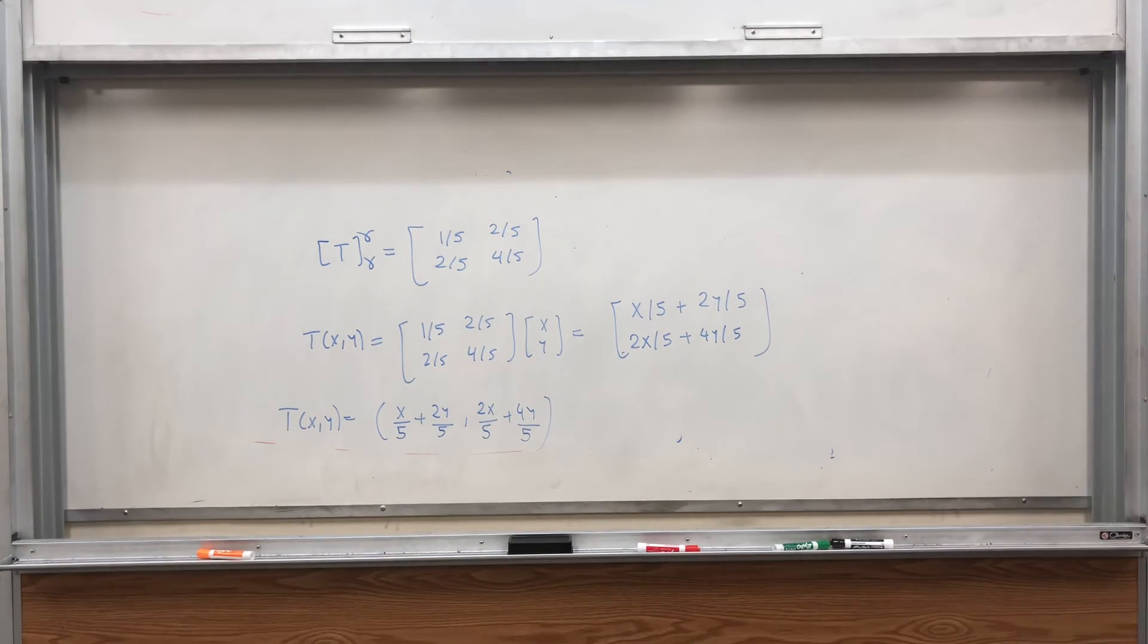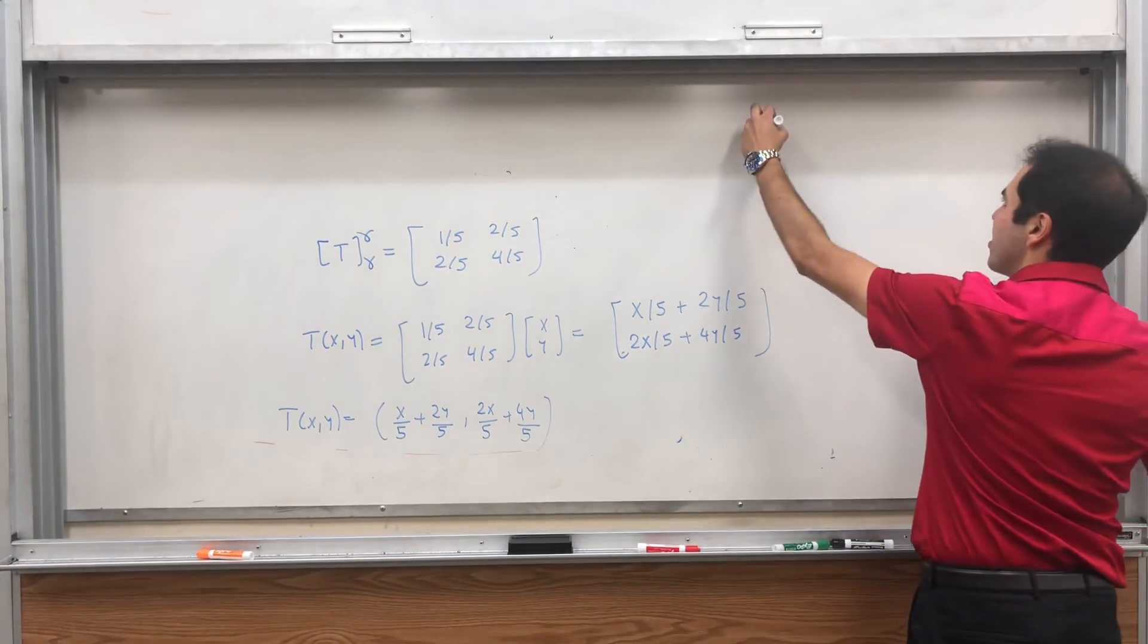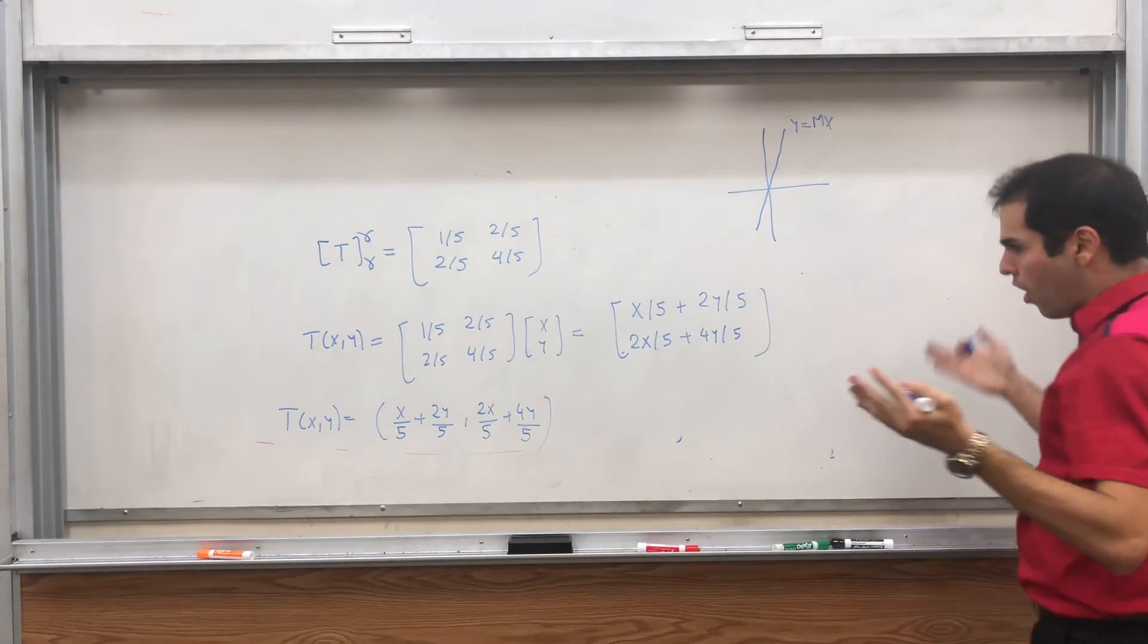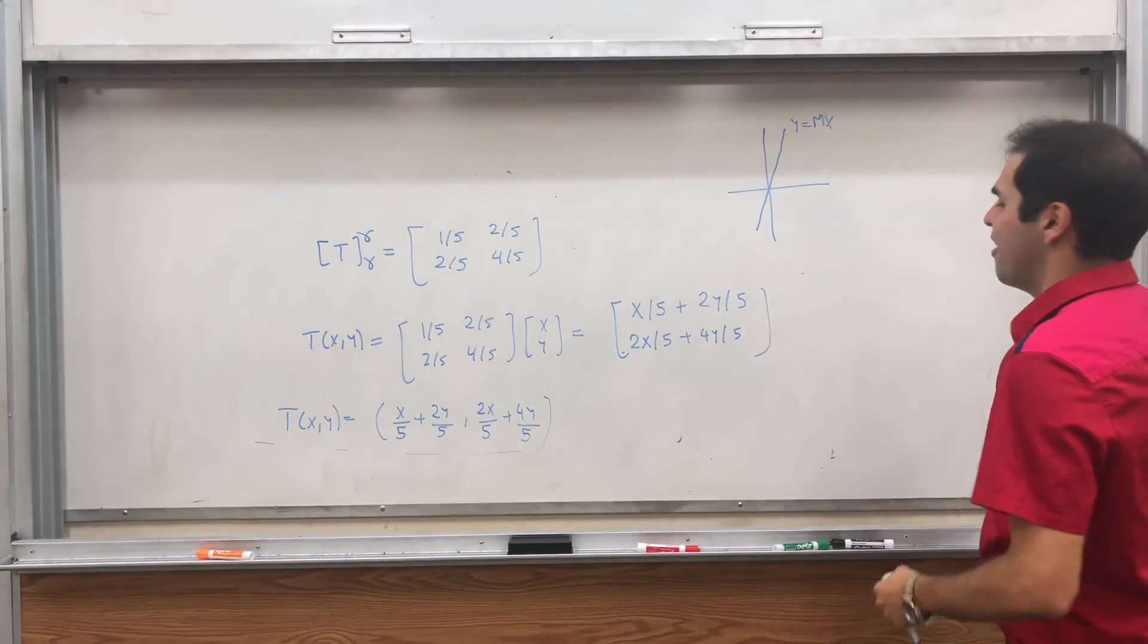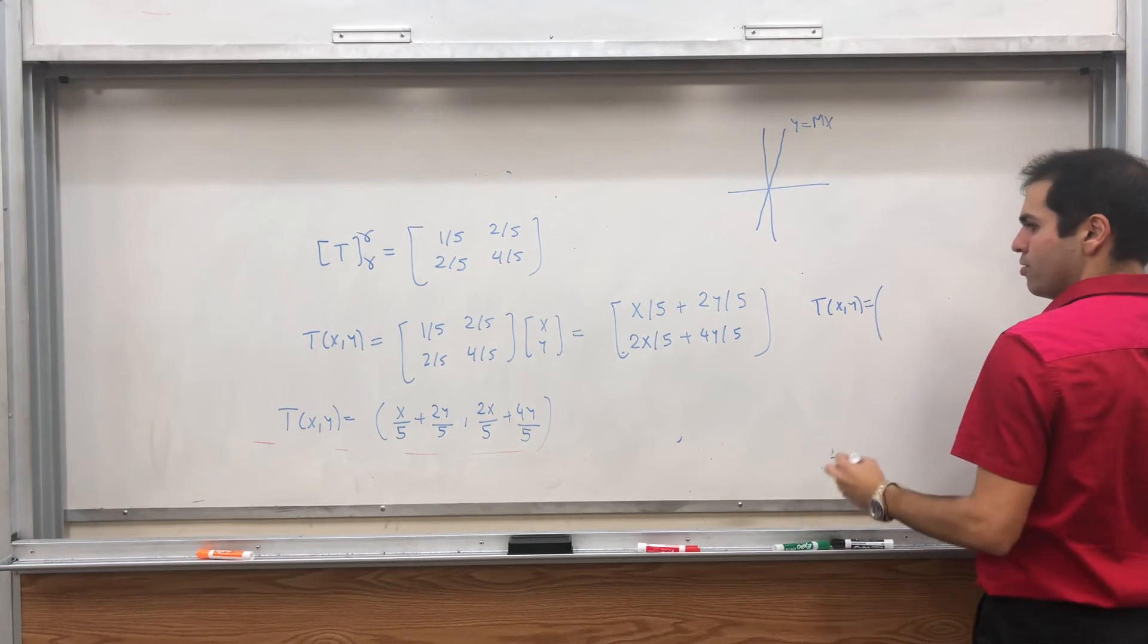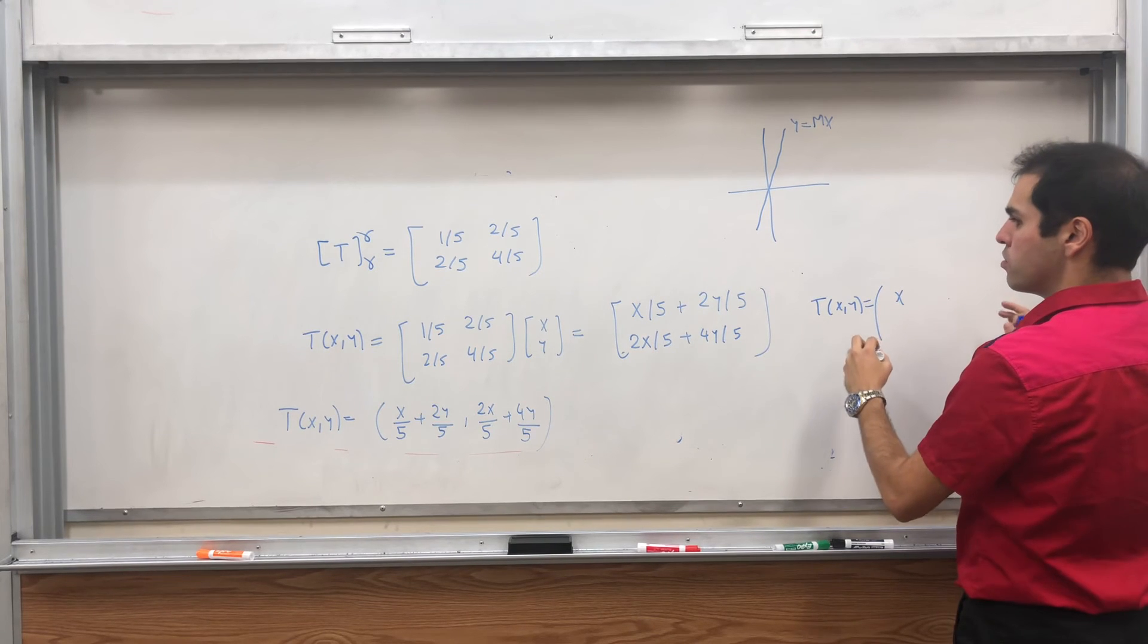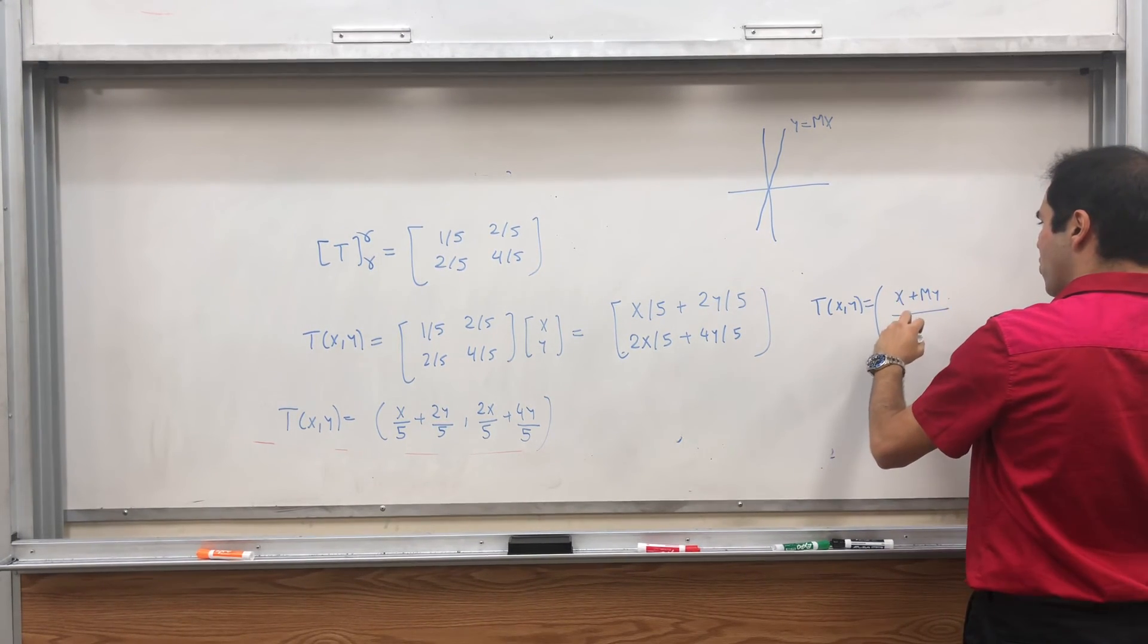Awesome sauce. Who would have thought? And in general, of course, you can do this with the line y equals mx. And all you need to do is just replace 2 by m, and then I believe you get something like T of x, y is, I guess, x over, if one, I think that's true, x plus my maybe,